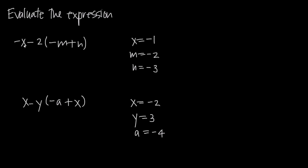So this is an expression here. We have negative x minus 2 times the quantity negative m plus n. We've been given values for x, m, and n. So when we say evaluate the expression, we just mean plug in the values we've been given for the variables and constants. Any values like x or y, we call those variables.